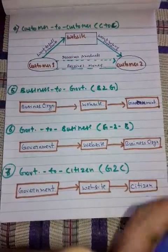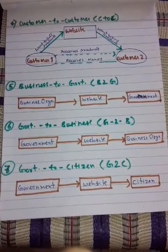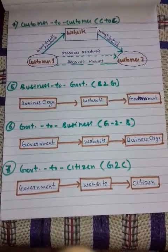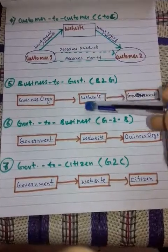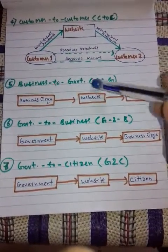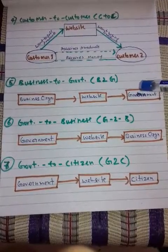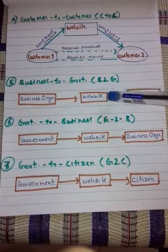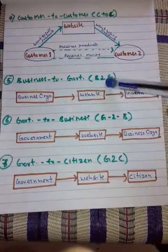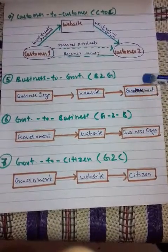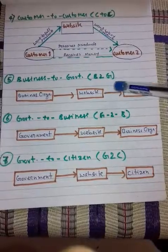The first e-governance model is Business to Government. The B2G model is a variant of the B2B model. These websites are used by the government to trade and exchange information between government and business organizations. Such websites are accredited by the government and provide a medium for businesses to submit application forms to the government. Companies and business organizations submit their forms on these websites, enabling interaction and exchange of information, goods, and services.